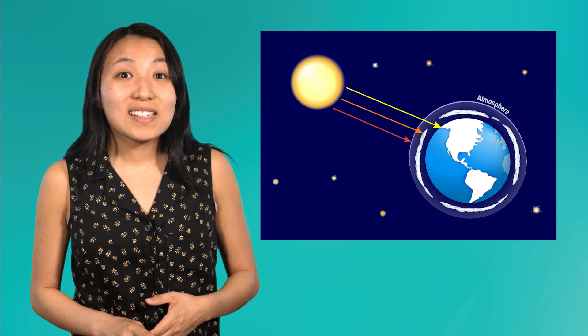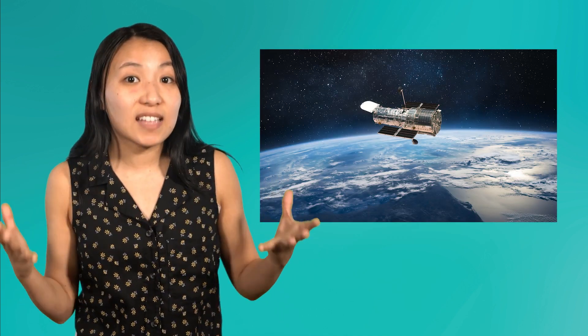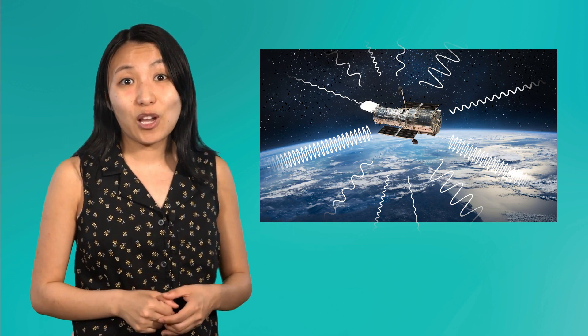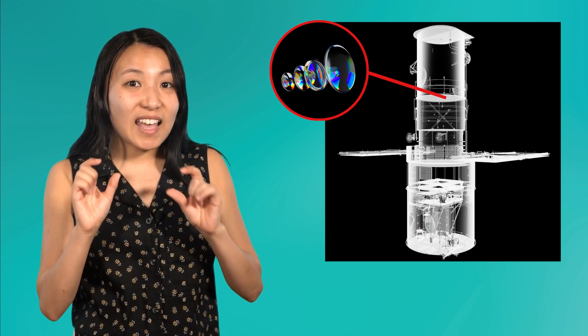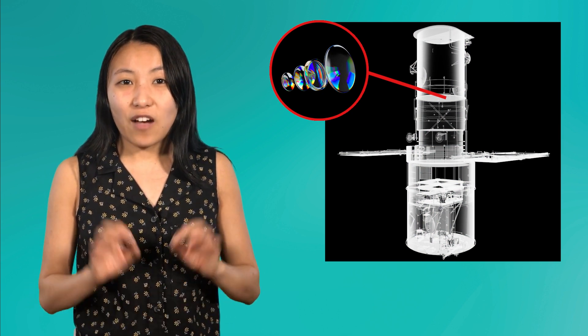Well, since our atmosphere blocks lots of electromagnetic radiation, the first step is getting outside of the atmosphere. Astronomers have launched a lot of high-tech satellite telescopes into space where they can orbit the Earth and get a clearer view of the universe without our atmosphere in the way. But remember, refracting and reflecting telescopes focus visible light — radio waves, gamma ray waves, and everything in between would pass right through their lenses. So astronomers have invented specific telescopes for all these different wavelengths instead. These telescopes have specialized lenses that are set up at precise angles to focus the electromagnetic waves of each different wavelength.